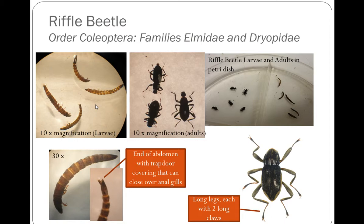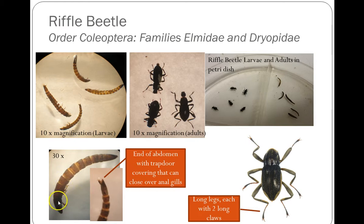This is what the larva looks like under 10 times magnification — a leathery, tan color to them. Under 30 times magnification it looks a lot like a caddisfly larva as seen in the other refresher video, but they do not have thoracic plates; each segment is the same from thorax to abdomen. Another characteristic of the larva is that they have a trap door at the end of their abdomen that can open and close to cover their gills and protect them.